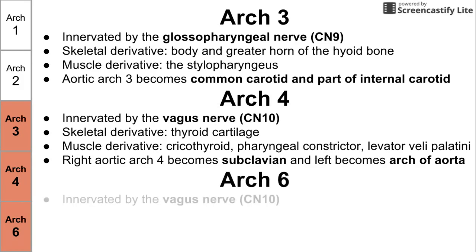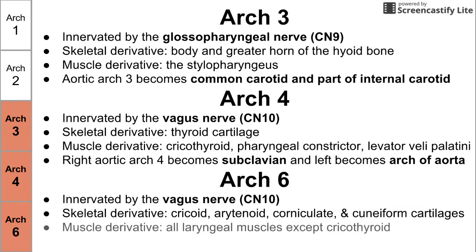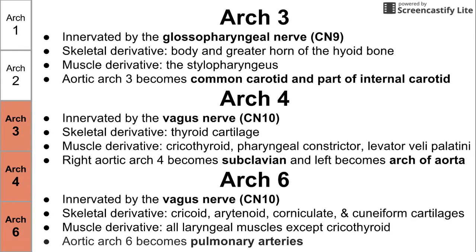Arch six is also innervated by the vagus nerve, cranial nerve ten. Skeletal derivatives of arch six include the cricoid, the arytenoid, the corniculate, and the cuneiform cartilages. Muscle derivatives from arch six are all the laryngeal muscles except for the cricothyroid. The aortic arch from arch six becomes the pulmonary arteries.